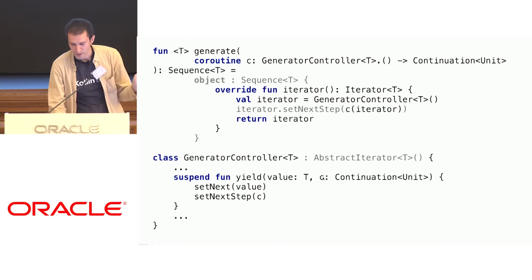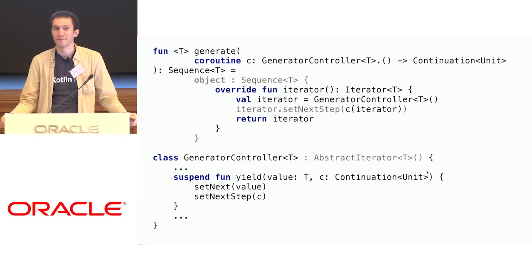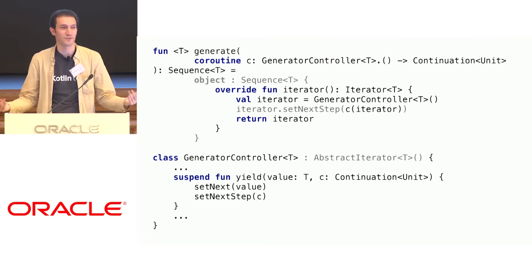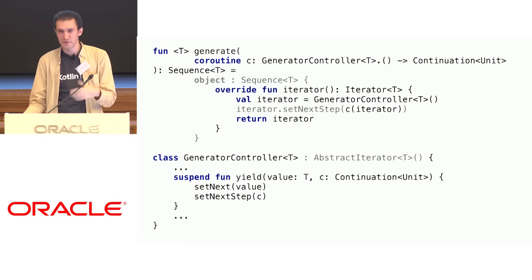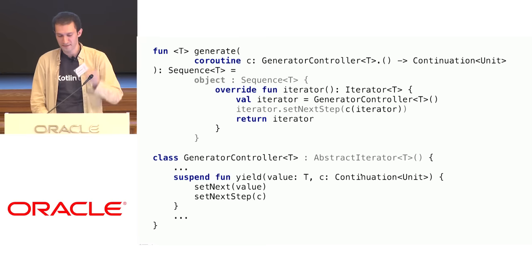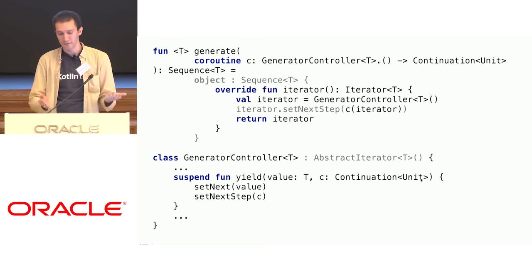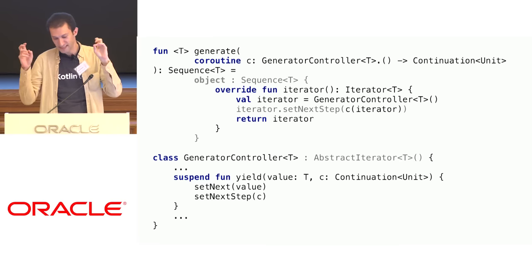A question to the audience: why does this continuation take Unit here? That's because yield doesn't return anything. This type is what the coroutine gets back from yield. Since it doesn't return anything interesting, it's Unit. We're not using yield as an expression — it's a statement. It doesn't return anything interesting.